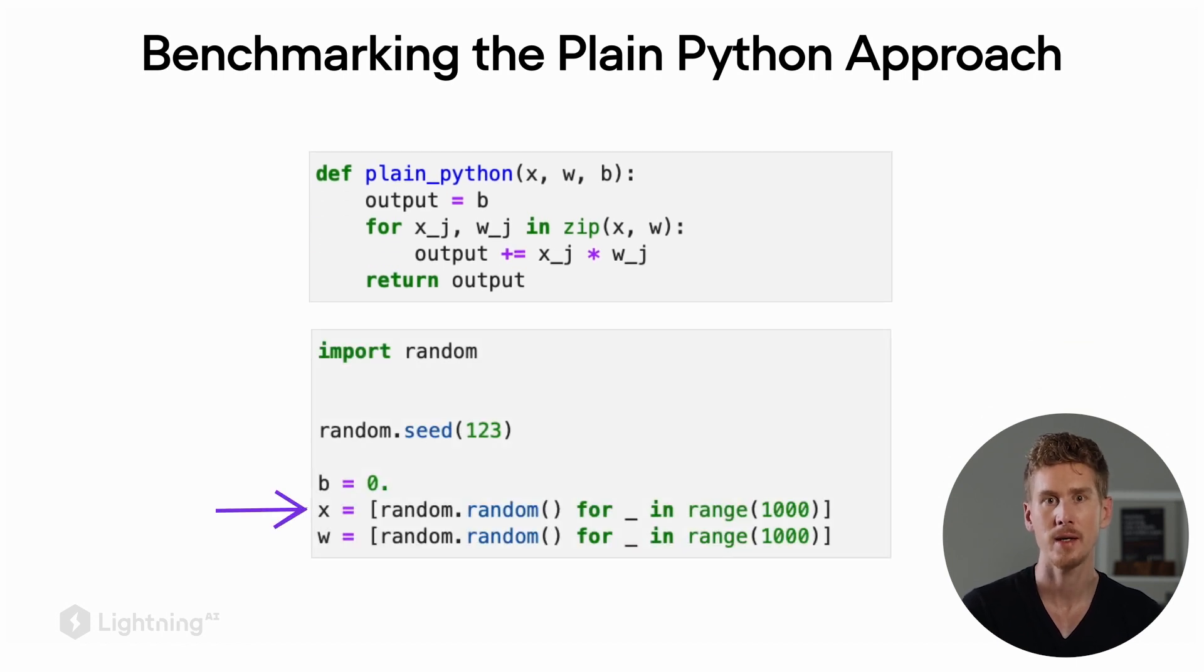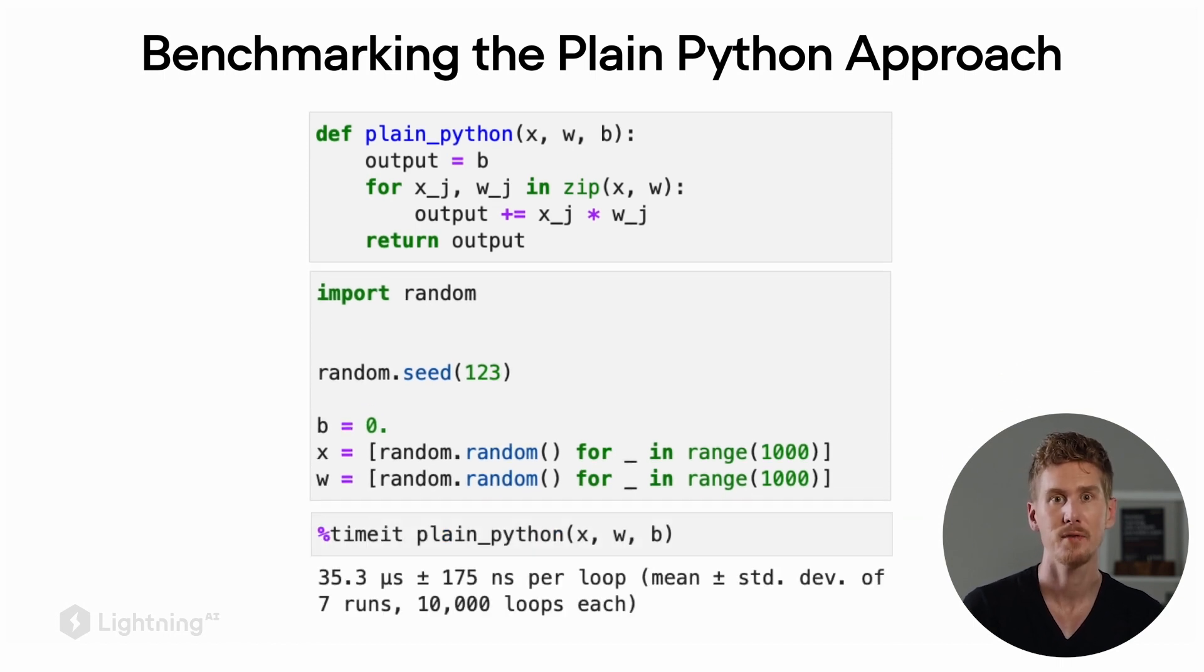For x, I'm here creating a list consisting of thousand numbers. Since we don't really care about the exact numbers, we use random numbers. And then correspondingly, we also have thousand numbers for the weights. Using the handy timeit function in a Jupyter notebook, I can then actually compute the runtime of this code. In this case, the for loop would take 35.3 microseconds to run.